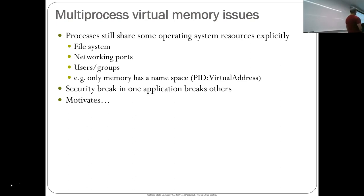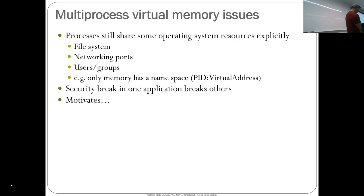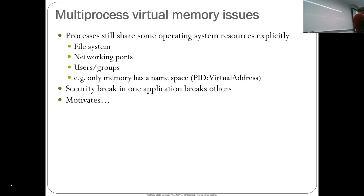Users and groups on the operating system are all shared — usernames, group names, that namespace is shared among all users and processes. The only thing with a namespace in a traditional OS is memory. The problem is that if you have a security breach in one application, you can potentially break into everything else on that system. This is what motivates virtual machines.